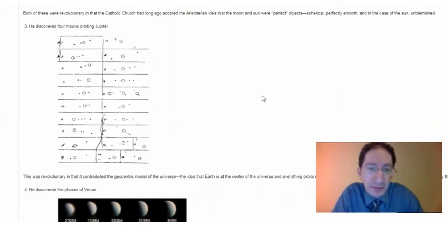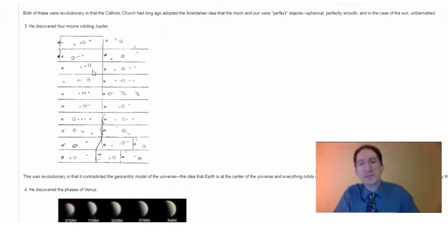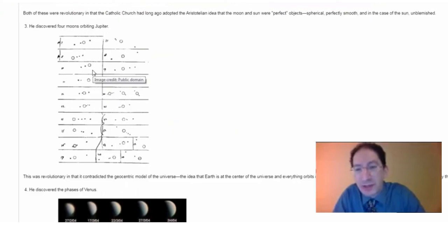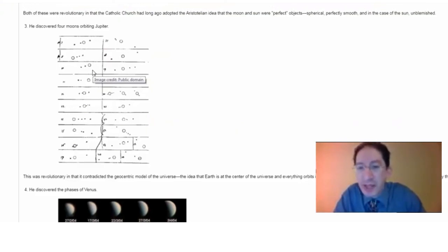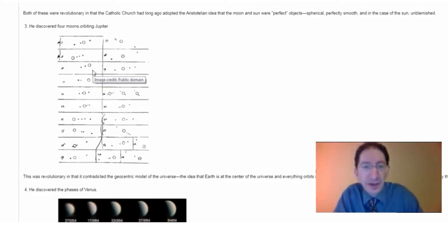Galileo's most famous discovery is the moons of Jupiter. He discovered four new worlds — four new objects in the sky — and watched them over time. You can see his original drawings here: they were in a line about Jupiter and moving about that planet. This was a big problem for the geocentric model, which teaches that everything must orbit Earth. The heliocentric model doesn't have that restriction — you can have moons orbiting a planet while that planet orbits the sun — but in the geocentric model, here were four objects clearly orbiting Jupiter, not Earth.